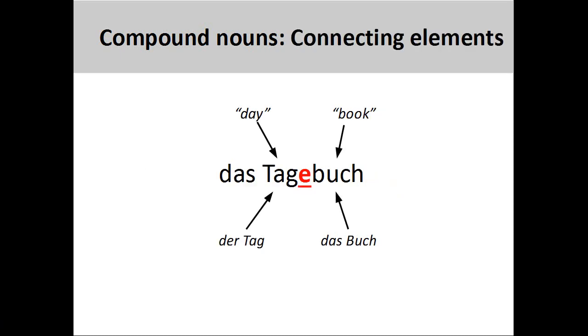Compound nouns are often joined by a connecting element. These elements are either the plural ending of the prior noun in the chain—an -e, -en, or -n—or a genitive case ending, an -s or -es. We will look at both these grammar topics in greater detail in later presentations. For now, it is important to note that there are no rules for determining when you use a connecting element.